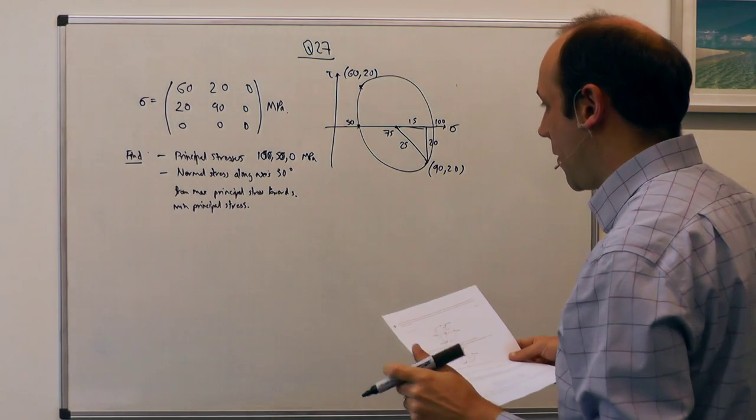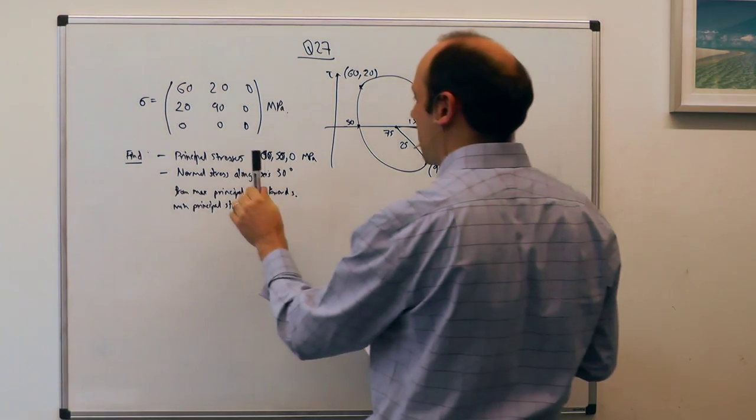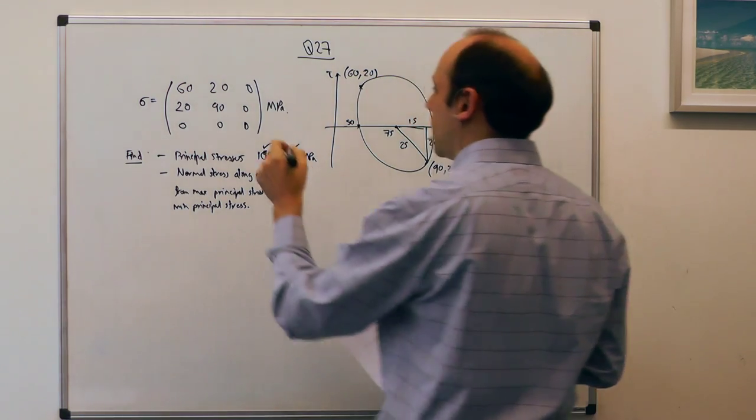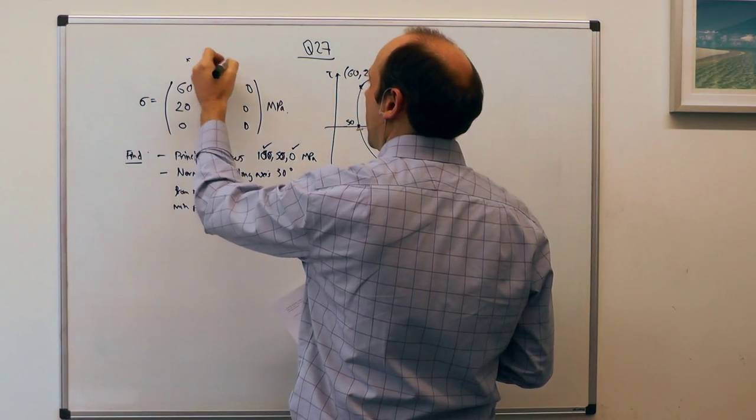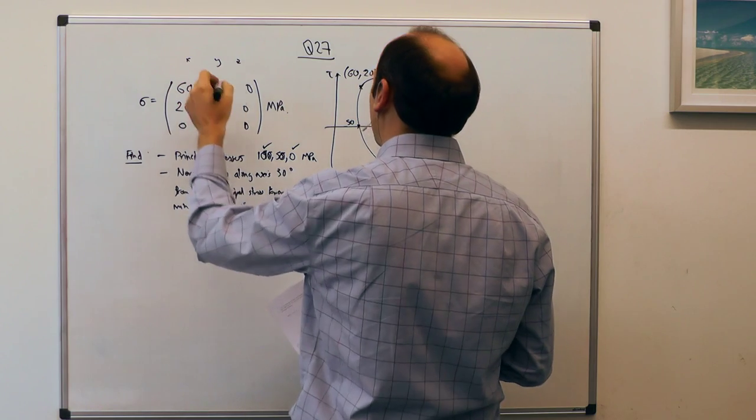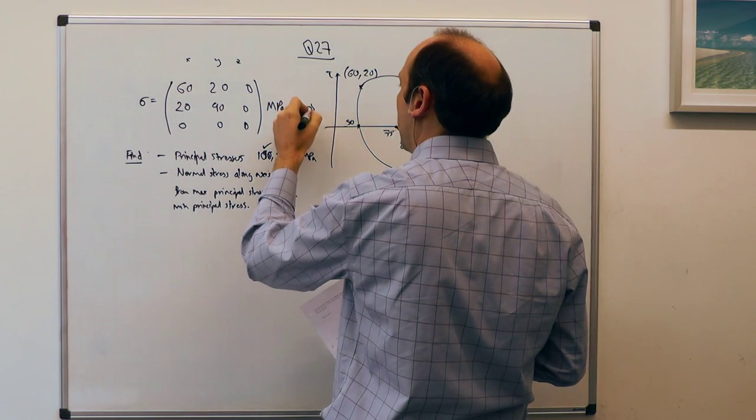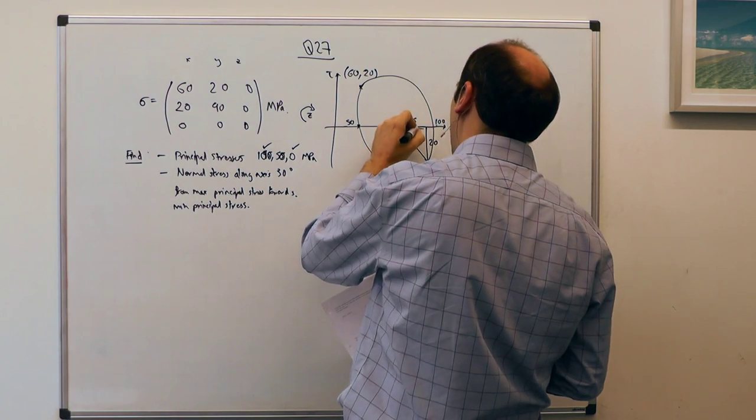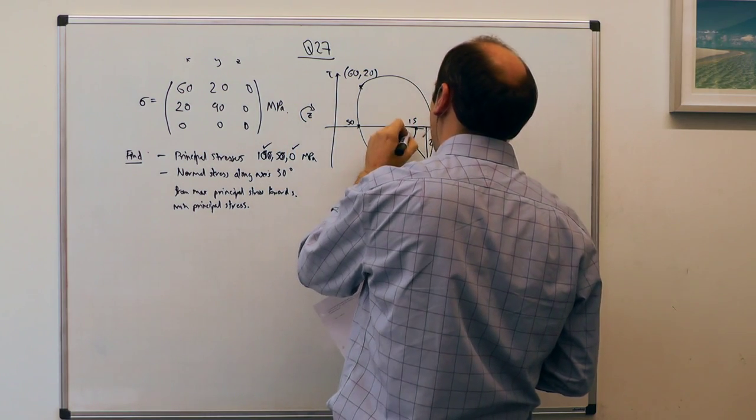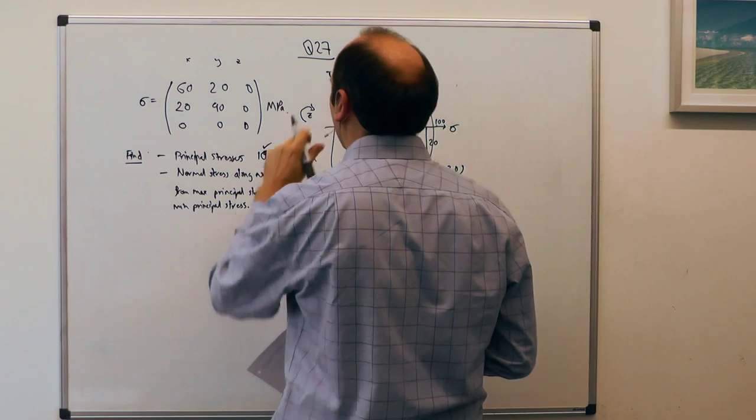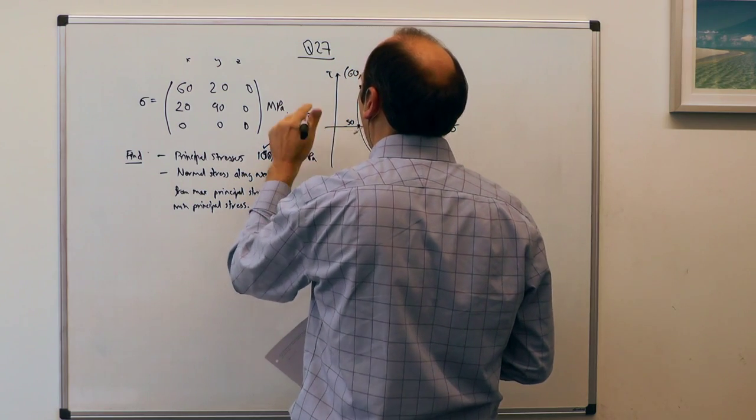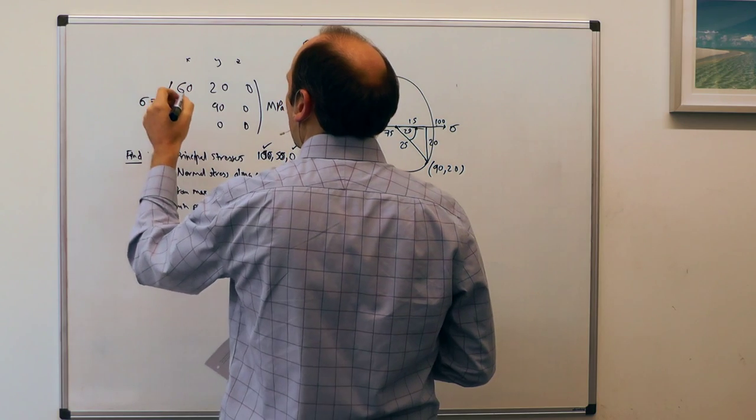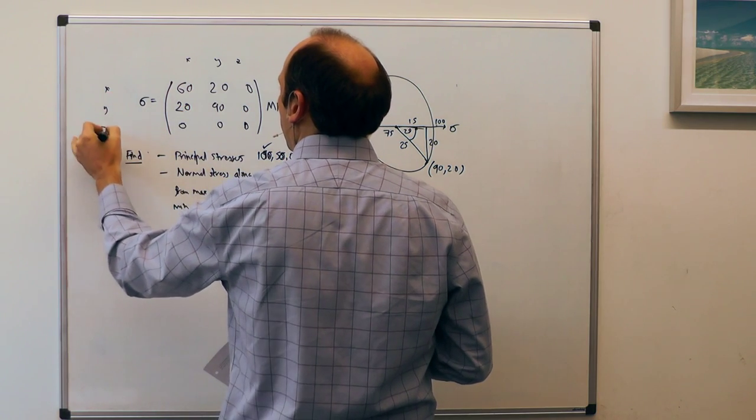And now we want to do a rotation of 30 degrees from the maximum principal stress, which is that one, towards the minimum principal stress, which is that one. So previously, if these axes were x, y, z, this Mohr's circle was a rotation about z. It's a rotation of that angle to theta about z. So I should draw my arrow the other way around, really. Now, x, y, z there, of course, as well.